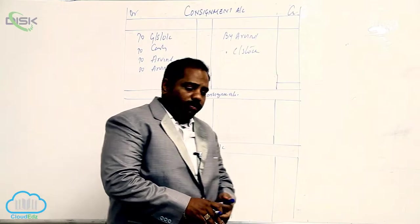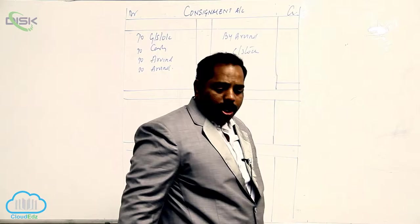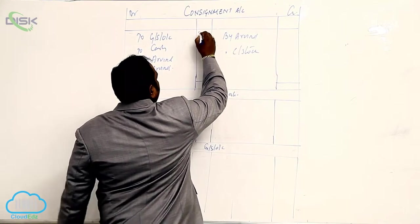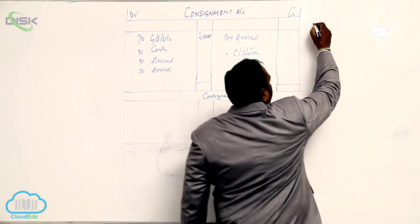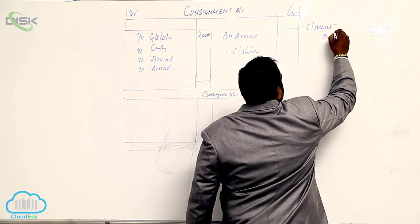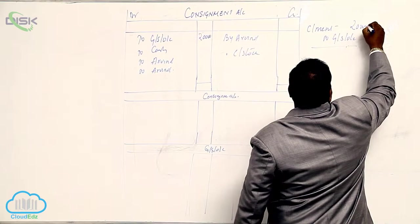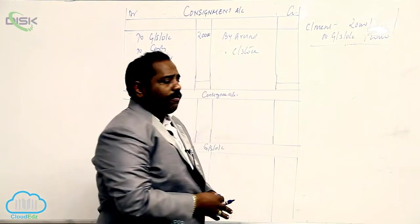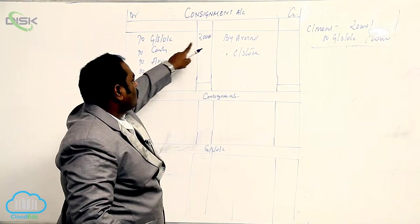Arvind has sent 20,000 worth of goods to his agent. Whenever he sends the goods — debit Goods Sent on Consignment — the entry is Consignment Account debit, to Goods Sent on Consignment, for 20,000.